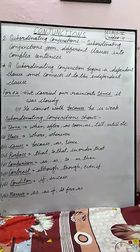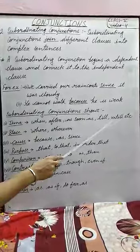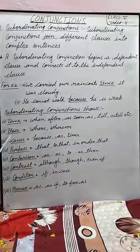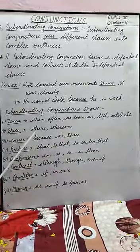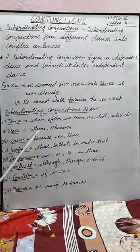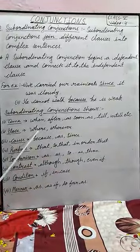In subordinating conjunctions, when the time is shown, we use words such as: when, after, as, as soon as, till, until, etc. To show place,